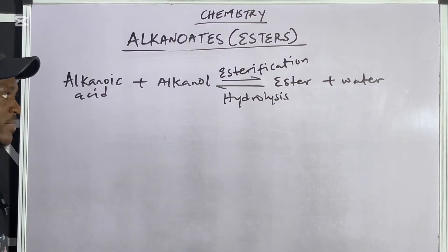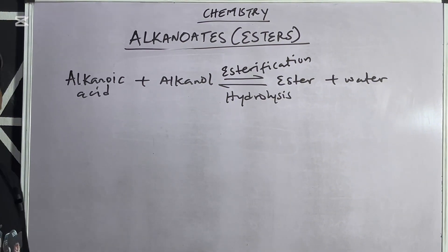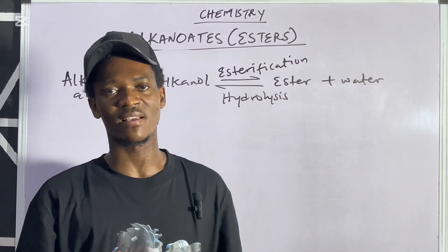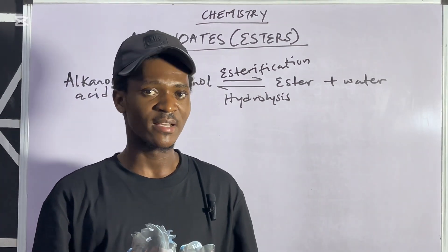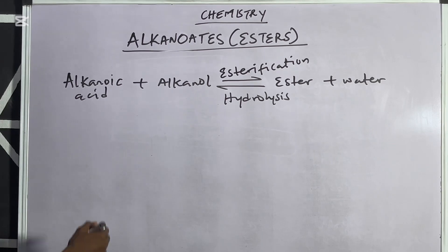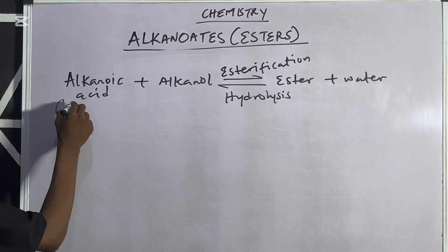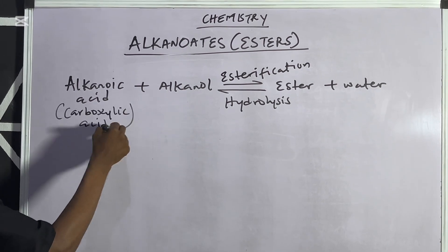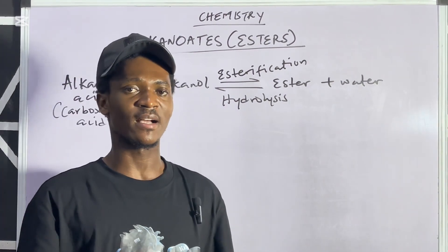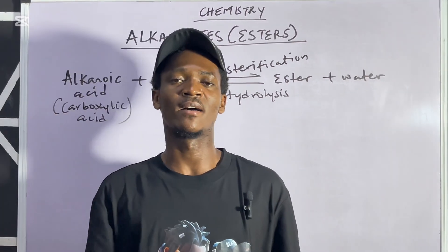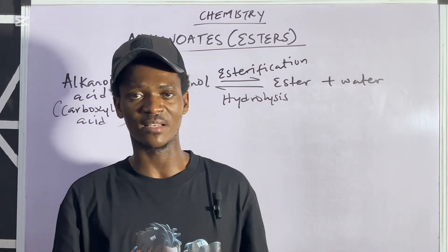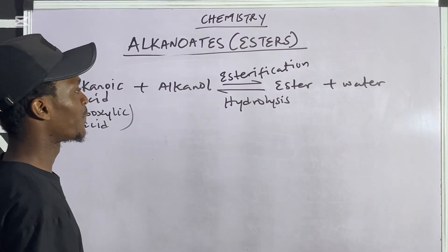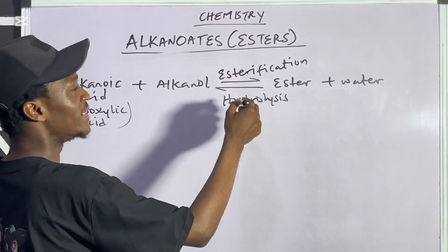Can I also say that esters are formed when there is a chemical reaction between carboxylic acid and an alkanol? Yes — because another name for alkanoic acid is carboxylic acid. So a chemical reaction between carboxylic acid and an alkanol forms ester and water. The forward reaction is esterification and the backward is hydrolysis.